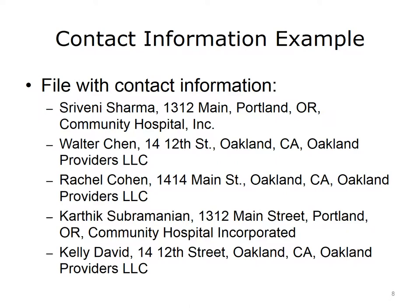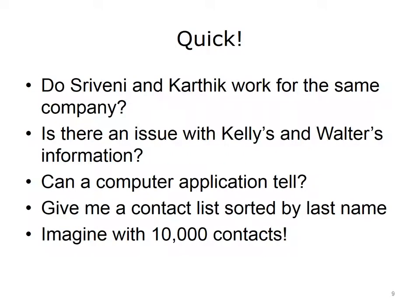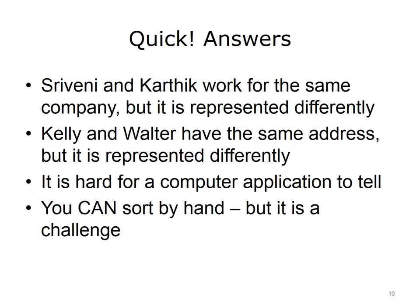This slide shows a file that contains names and contact information of some individuals. After reviewing it, consider: do Sriveni and Karthik work for the same company? Would a computer application be able to tell that there was an issue with the addresses for Kelly and Walter? Can you sort this list by last name? While humans can easily see that Sriveni and Karthik work for the same company, note that Sriveni's company is listed as Community Hospital Inc. and Karthik's as Community Hospital Incorporated. Similarly, Kelly's address is 14 12th Street with street spelled out, while Walter has the same address but with street abbreviated to ST. A computer system, even one with artificial intelligence, would have significantly greater challenges determining that the companies and addresses are the same.